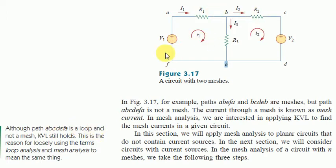Although path A, B, C, D, E, F, A is a loop and not a mesh, KVL still holds. This is the reason for loosely using the terms loop analysis and mesh analysis to mean the same thing. The key difference is that a mesh contains no other loop inside it.